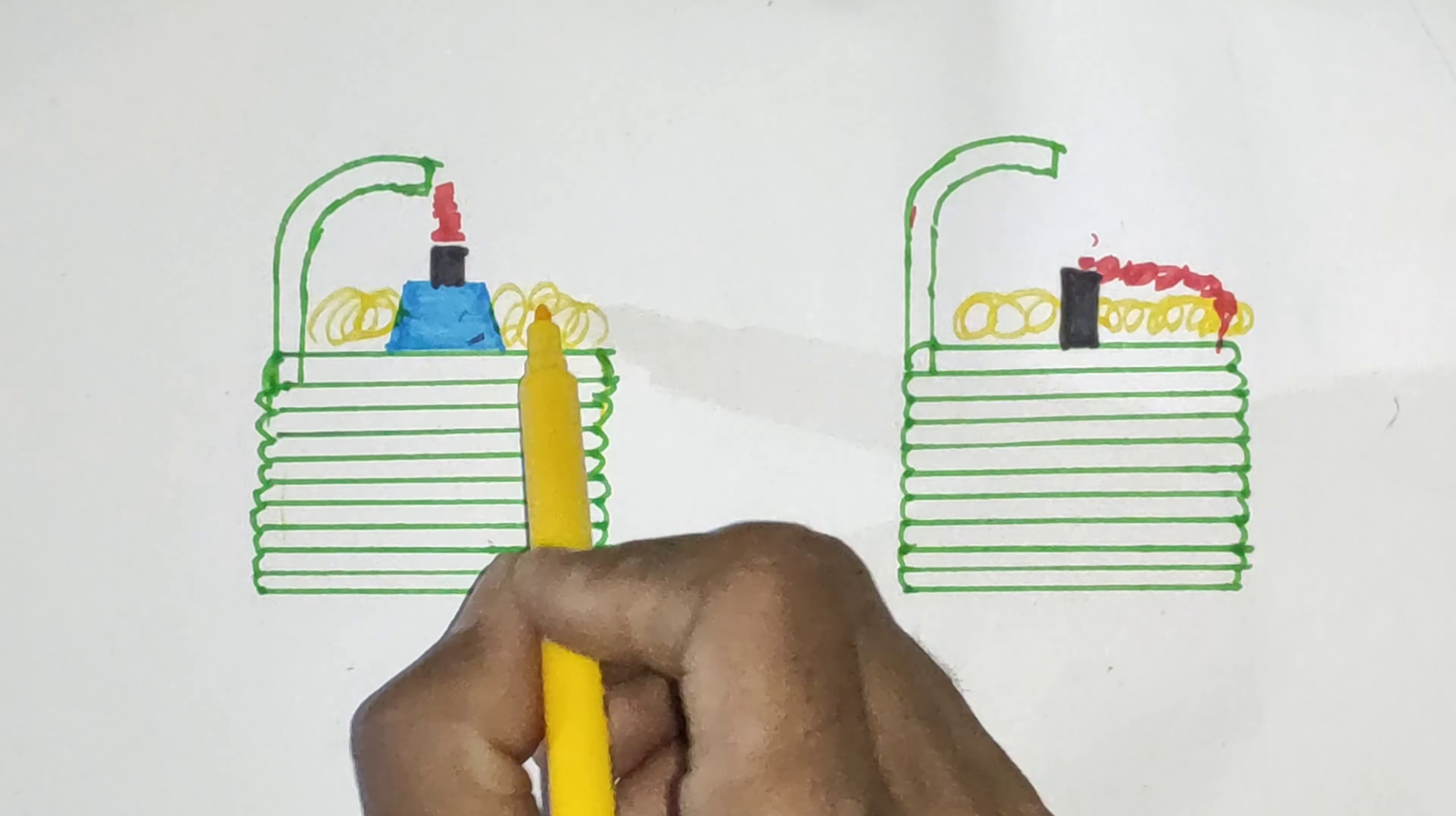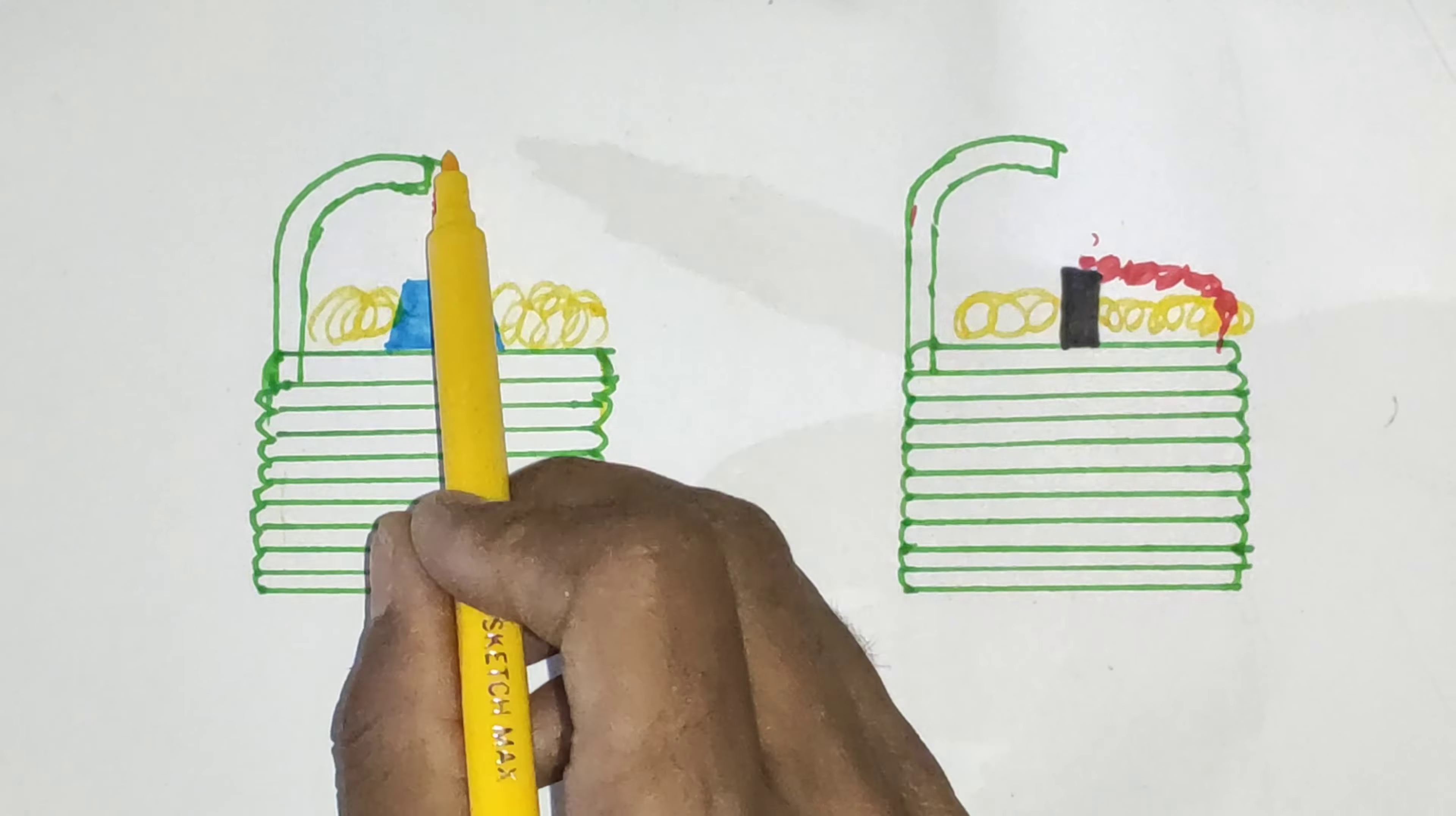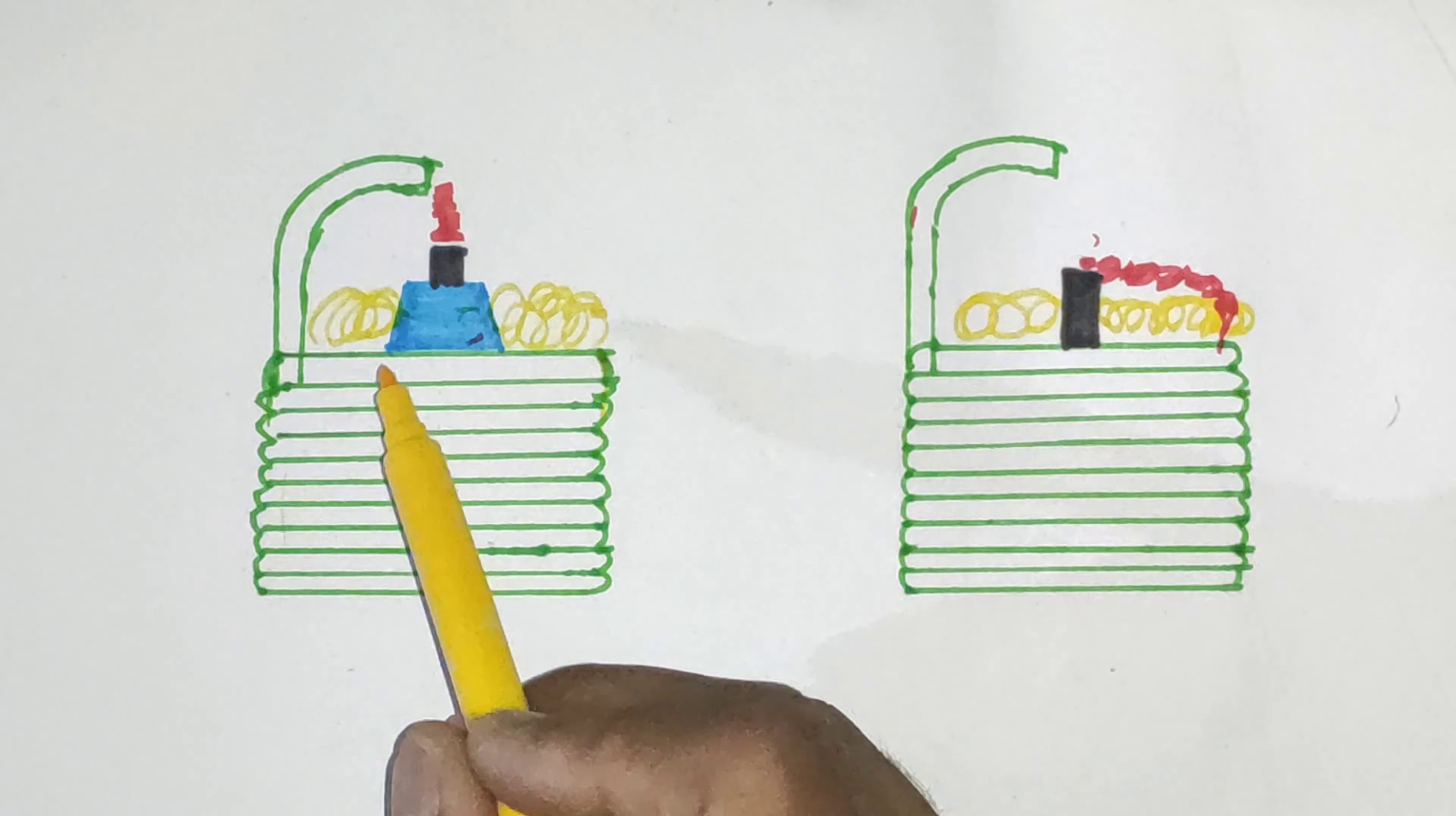And so normal firing can occur - normal arcing from the electrode to the ground electrode. So normal combustion is basically protecting the spark from any carbon that might occur and start to build up on the plug.